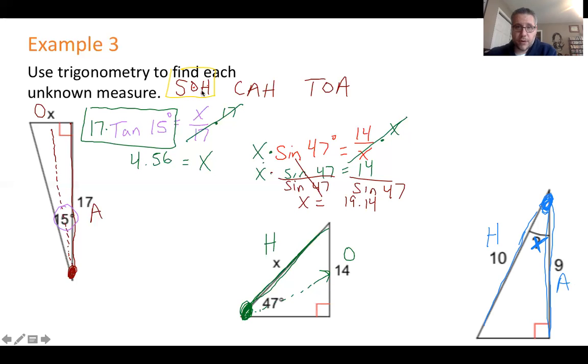Let's see. Sine uses opposite hypotenuse. Nope. Cosine uses adjacent and hypotenuse. Yes, that's what I have here. Adjacent and hypotenuse. So now for this one, I am using cosine.